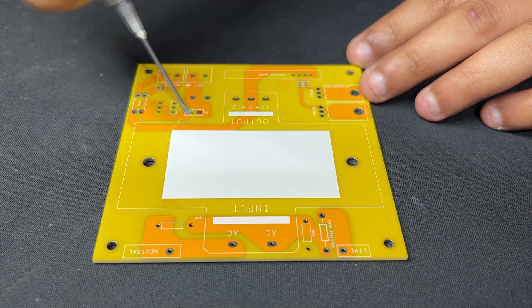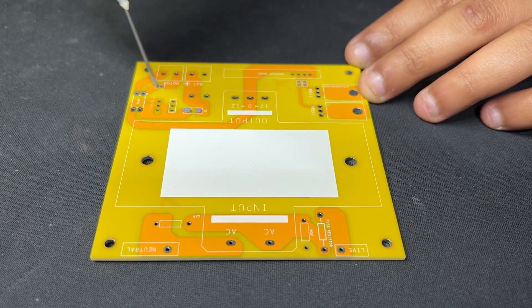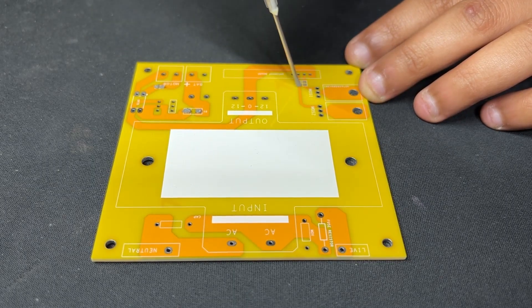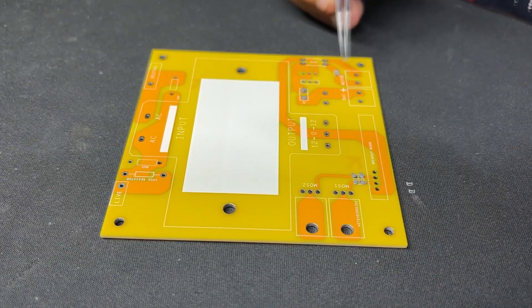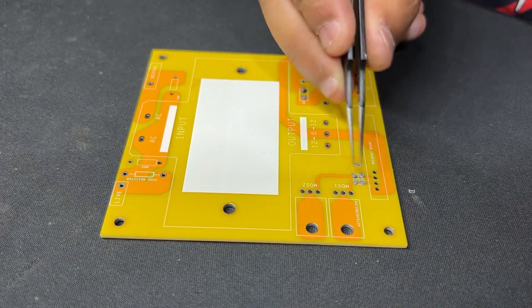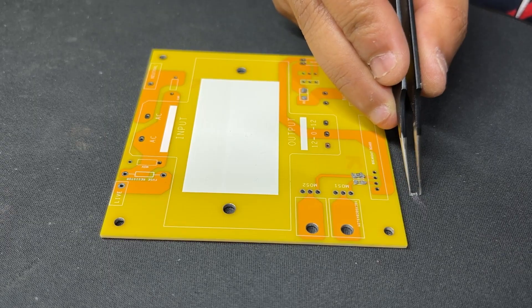We begin the MOSFET board assembly process by applying solder paste to each SMD component pad with the solder paste dispensing needle. Next, we use ESD tweezers to select and position all the SMD components in their place.